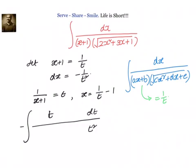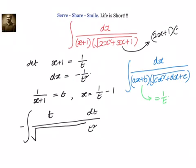What we have here is square root of 2x squared plus 3x plus 1. I can write it as (2x plus 1) into (x plus 1).